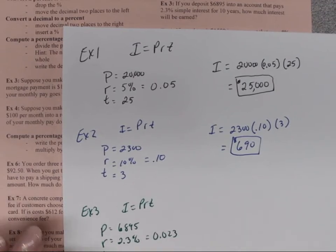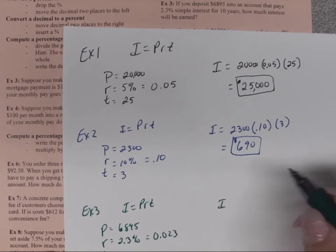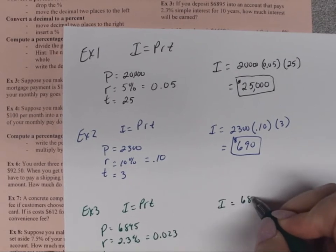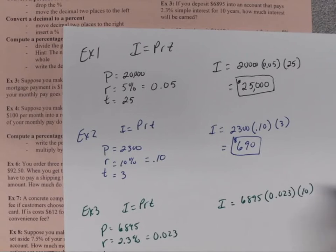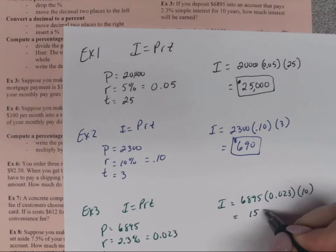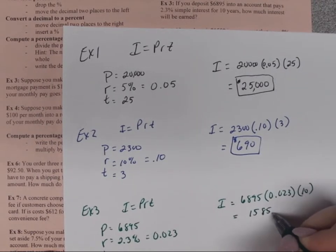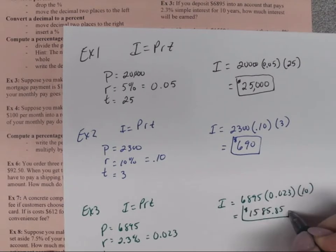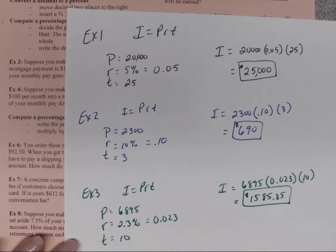So the interest that will be earned will be $6,895 times 0.023 times 10, and we will gain $1,585.85. So that's how much interest we will gain over those 10 years.